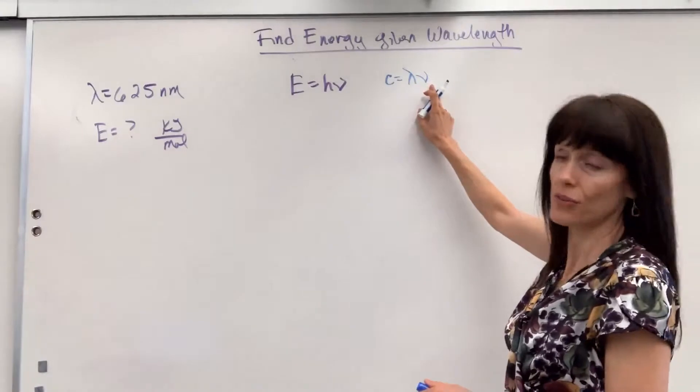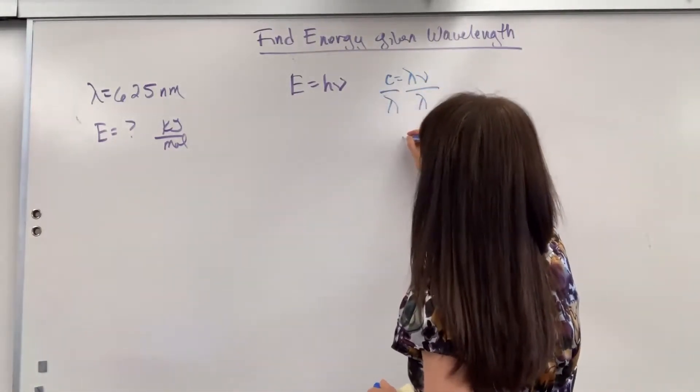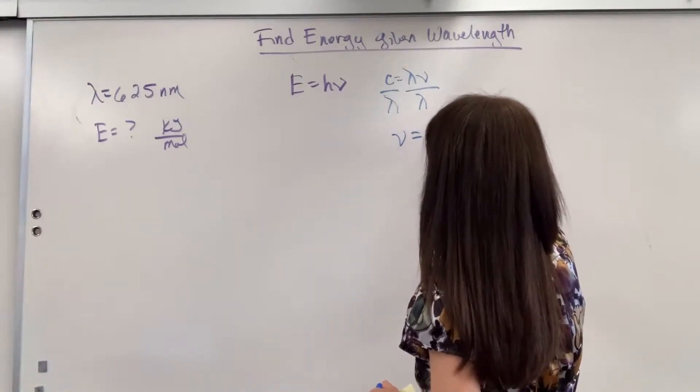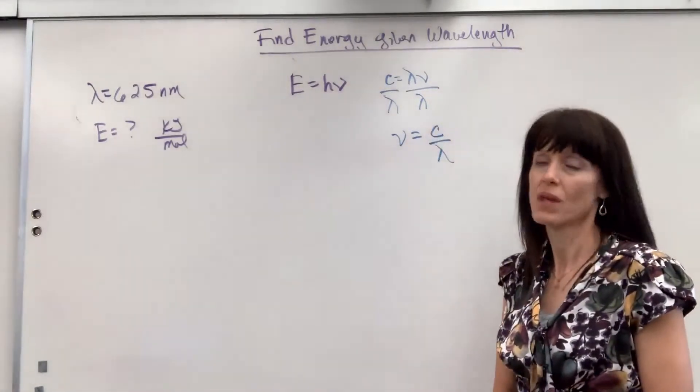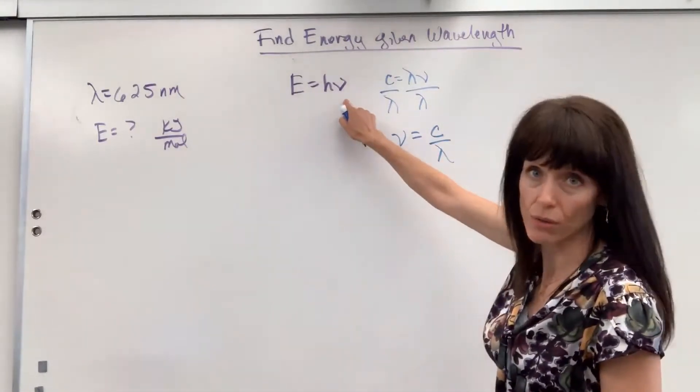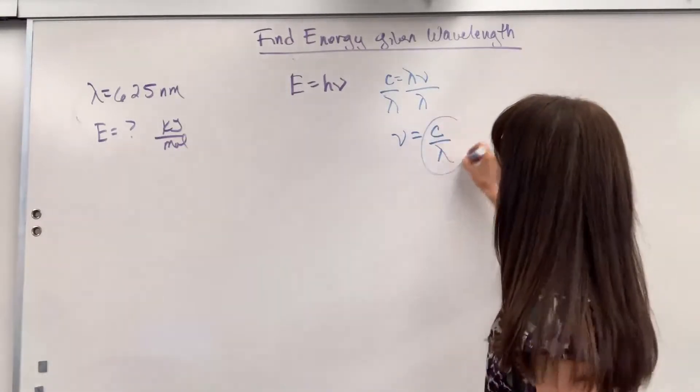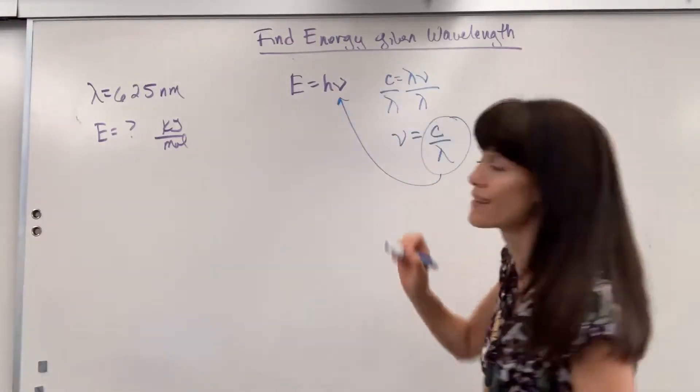So again, let's solve for nu. Divide both sides by lambda and we get nu equals speed of light divided by lambda. Well, what I'm going to do, since this is nu and that's nu, I know that nu equals speed of light over lambda. I'm going to substitute that in.